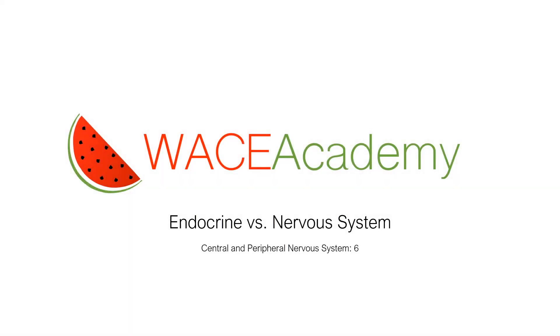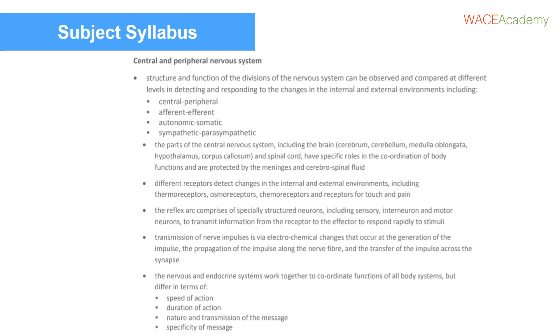Welcome to this WAIS Academy online lesson on the endocrine system versus the nervous system. This lesson covers Unit 3, Central and Peripheral Nervous System, Point 6.